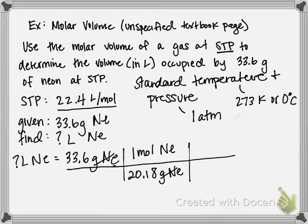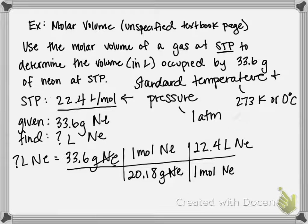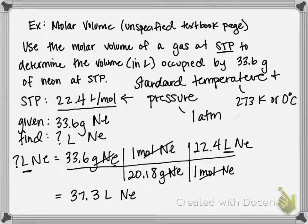On the bottom goes what I'm trying to cancel, and we're getting this from the 22.4 liters. So at STP, one mole of neon contains 22.4 liters of neon. My moles then cancel, and I am left with the unit of volume, which is what I'm looking for. So multiplying across and dividing on the bottom, I get that there are 37.3 liters of neon at STP contained in the gram amount that was given to us.